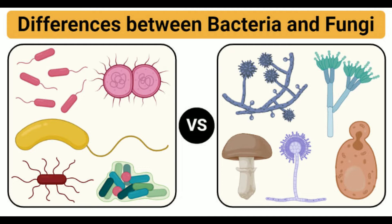Fungi Definition: Fungi (singular fungus) are eukaryotes that are characterized by the presence of chitin in the cell wall. Common fungi include microscopic organisms like molds and yeast, and macroscopic organisms like mushrooms. Fungi are heterotrophs that depend on autotrophs for their food and energy indirectly. These organisms absorb their nutrients by secreting digestive enzymes into the environment. Fungi are the principal decomposers in the ecosystem, which convert complex organic compounds into inorganic compounds.